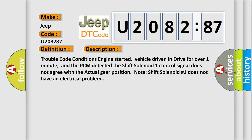Trouble code conditions: engine started, vehicle driven in drive for over one minute, and the PCM detected the shift solenoid 1 control signal does not agree with the actual gear position. Note: shift solenoid number 1 does not have an electrical problem.